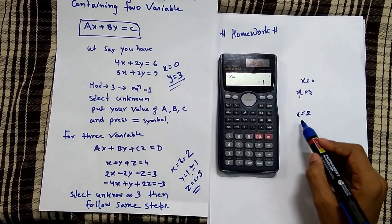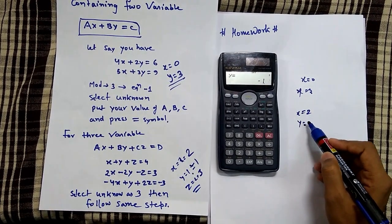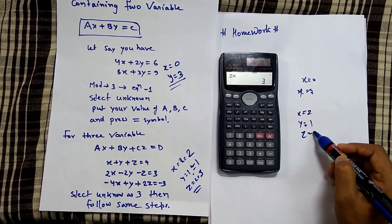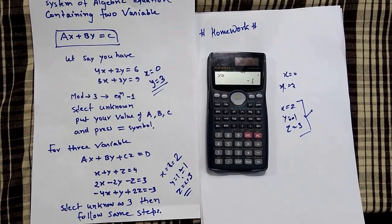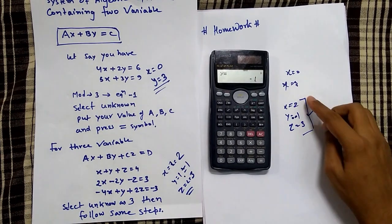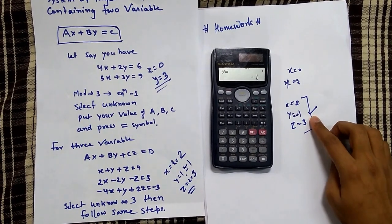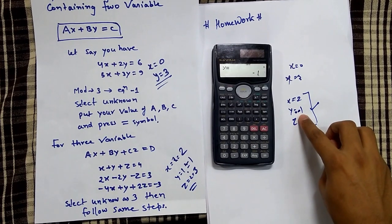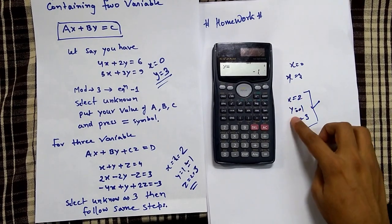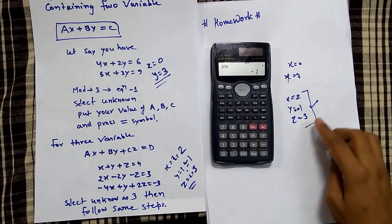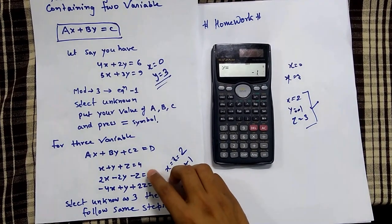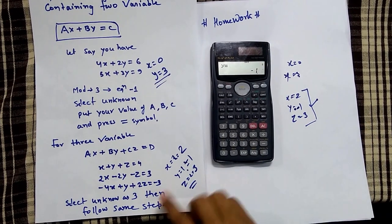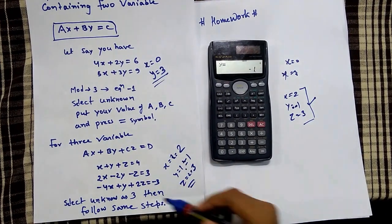We get x equal to 2, y equal to 1, and z equal to 3. And sorry — where I wrote 1, it should be minus 1. So the final answers are x equal to 2, y equal to minus 1, z equal to 3 — these are the values of x, y, and z for this system of 3 equations.